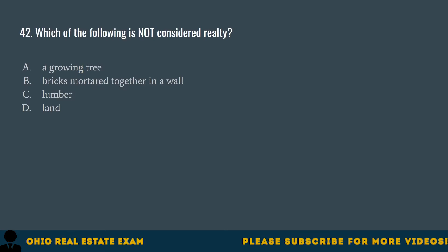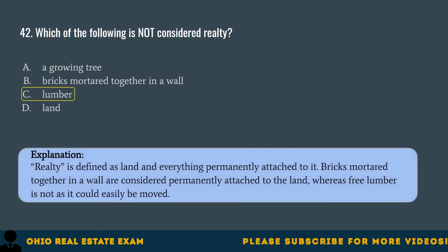Question 42. Which of the following is not considered realty? A. A growing tree. B. Bricks mortared together in a wall. C. Lumber. D. Land. The correct answer is C. Lumber. Realty is defined as land and everything permanently attached to it. Bricks mortared together in a wall are considered permanently attached to the land, whereas free lumber is not, as it could easily be moved.